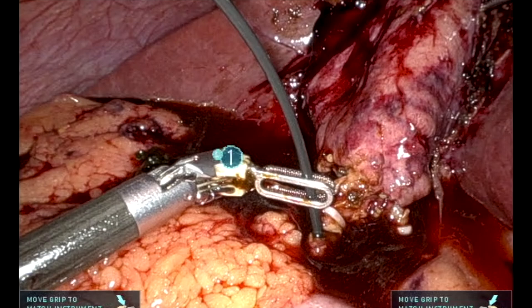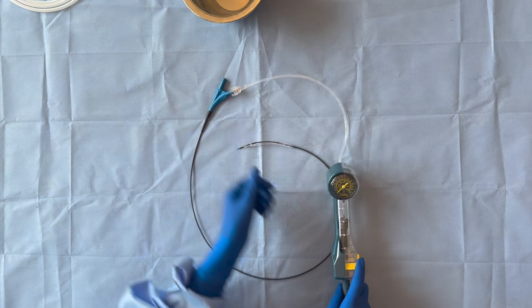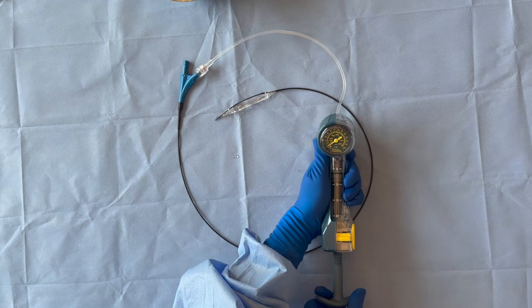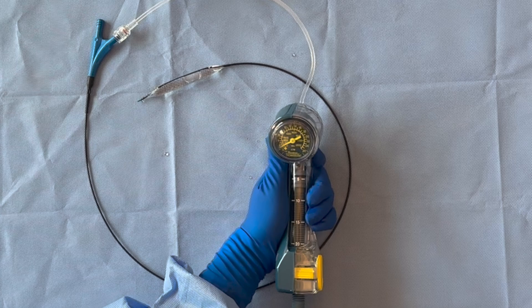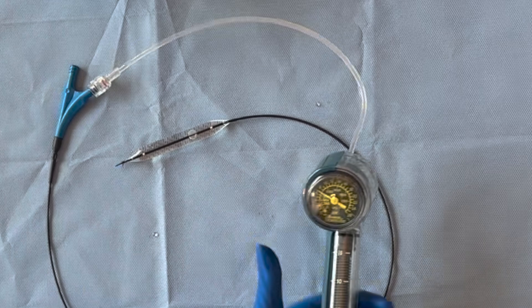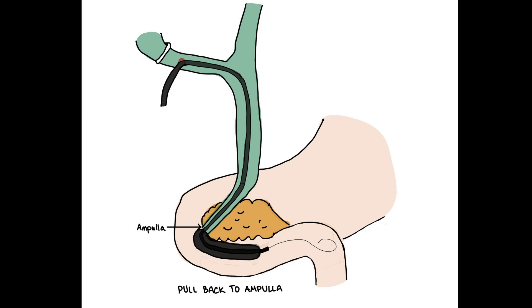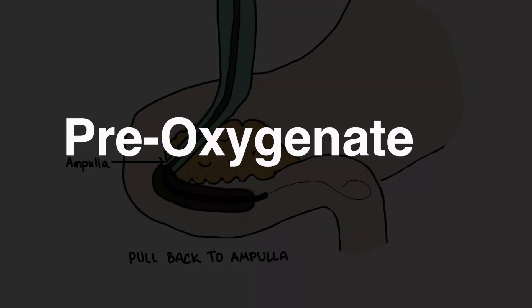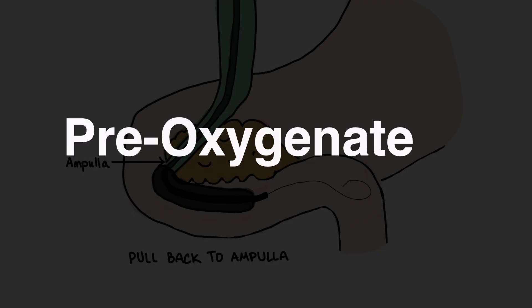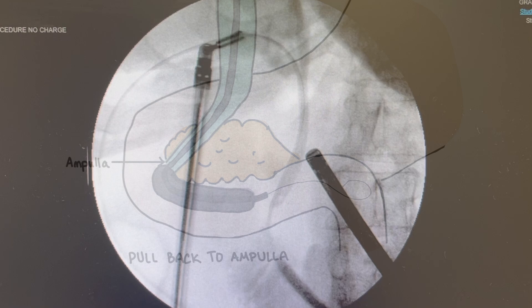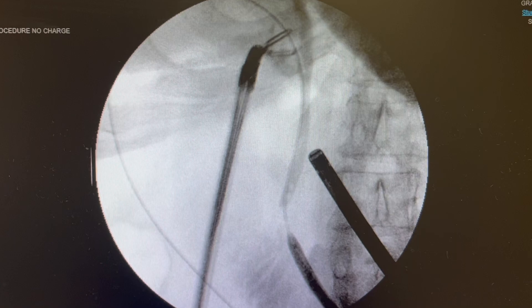Next, inflate the balloon with contrast. To do this, connect the inflation device to the balloon port and twist the plunger to the right. Watch under fluoroscopy and you will see the balloon inflate. Once inflated to the manufacturing-guided atmospheres of pressure, you are ready for the next step. Second, pull back the balloon until it meets resistance at the ampulla. You will know you have reached this as you will not be able to pull the balloon back any further. Here you can see the balloon being pulled back by the console surgeon under fluoroscopy until it hits resistance and can go back no further as it is at the ampulla.